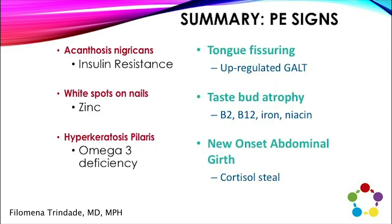To summarize physical exam findings: acanthosis nigricans gives us an idea about insulin resistance; white spots on nails are associated with low zinc; hyperkeratosis pilaris indicates omega-3 deficiency; enhanced tongue fissuring indicates upregulated gut-associated lymphoid tissue; and taste bud atrophy can indicate low B2 riboflavin, low iron, low niacin, or low B12 — with riboflavin being a particularly important and often-forgotten B vitamin. A new-onset abdominal girth points to elevated cortisol, really a diversion of progesterone precursors along the steroidogenic pathway away from the sex hormones and toward glucocorticoids.